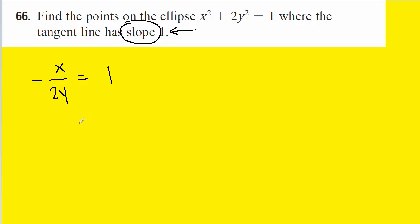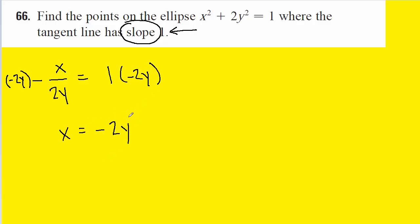Next, we can solve this equation either for x or for y, and it turns out it's probably easier to solve for x. So we'll multiply both sides of the equation by negative 2y, which will allow us to solve for x. The key to the question is to take this expression for x and plug it back into the original equation in order to find the actual y coordinates for the points the question is seeking.